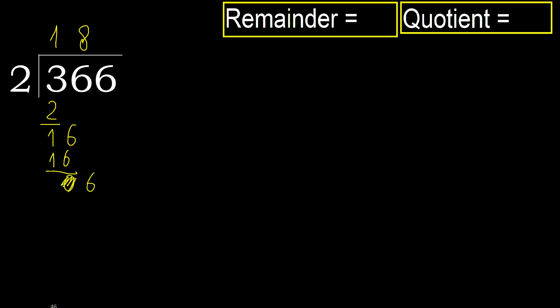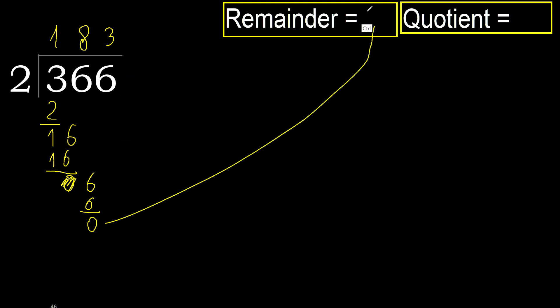Next, eliminate the zero on this side. Bring down 6. 2 multiplied by 3 is 6, which is not greater. Subtract. Next, that is not a number, therefore finish it.